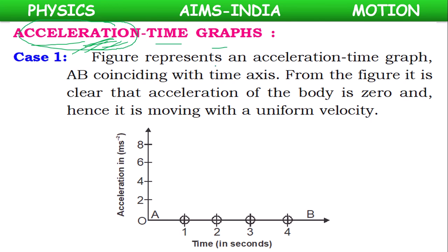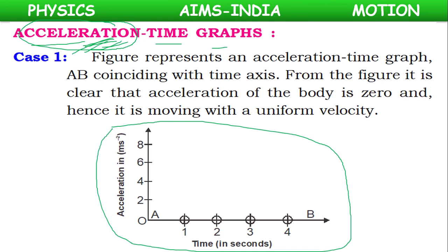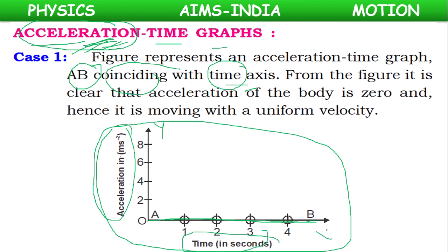The figure represents an acceleration-time graph where line AB is coinciding with the time axis. On the y-axis we have acceleration, on the x-axis we have time in seconds. Since AB coincides with the x-axis, at every point on AB the y-coordinate — that is, the acceleration value — is zero.